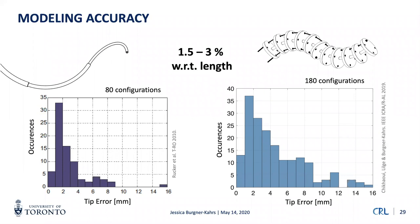Regarding accuracy for this extensible tendon-actuated continuum robot — the first of its kind — we can similarly use Cosserat theory of elastic rods to describe the robot shape based on tendon tension. The error distribution is about the same: 1.5 to 3% with respect to length.